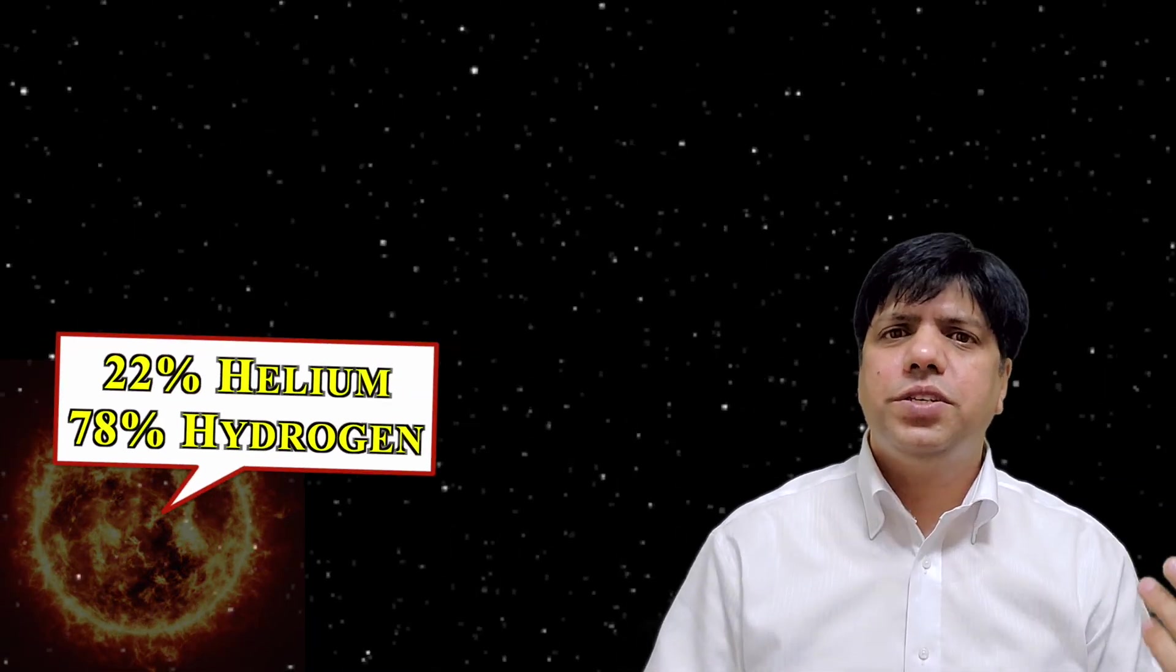Now how sitting on earth do we know that there must be this gas emanating from the clouds of planet Venus? Well the answer is very interesting to understand how we can find that sun has 22 percent helium, 78 percent hydrogen.